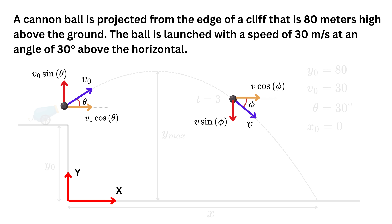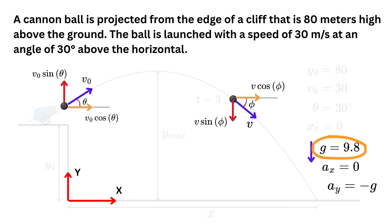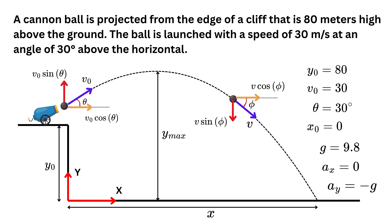The vertical velocity component will be negative when directed downward, since we defined the positive y-axis upward. Gravity g acts downward at 9.8 meters per second squared. We also assume no air resistance, which means there is no acceleration in the horizontal direction: a_x equals zero. The only acceleration in the vertical direction is gravity, so a_y equals negative g. With this, we are now all set to solve any type of projectile motion question.